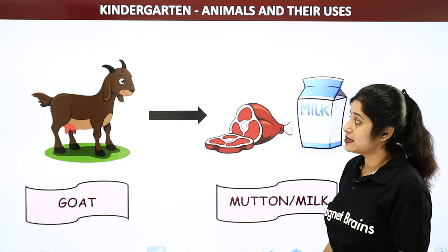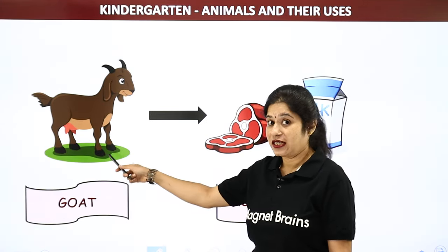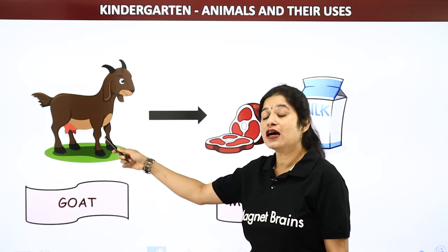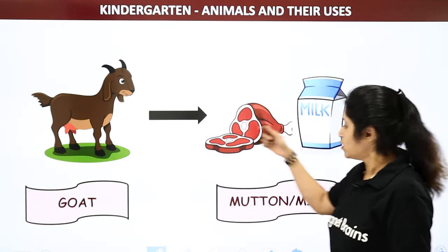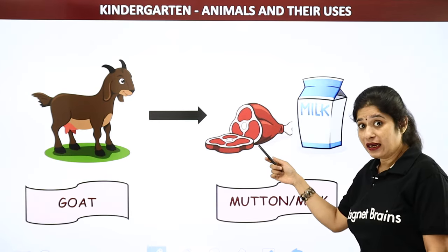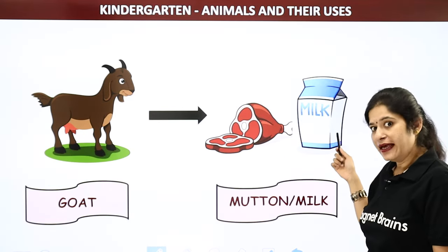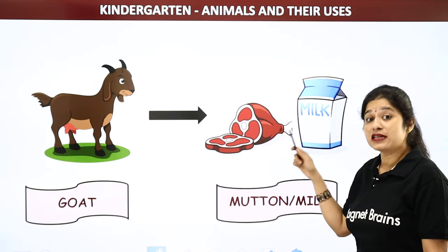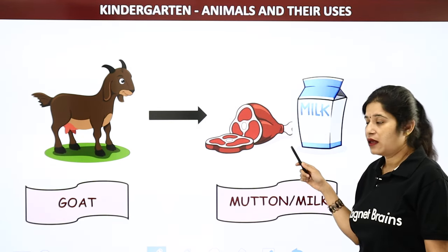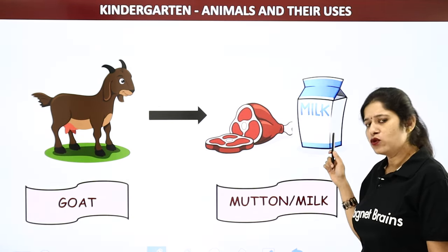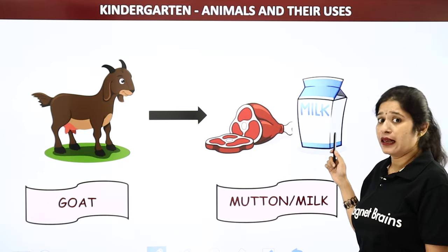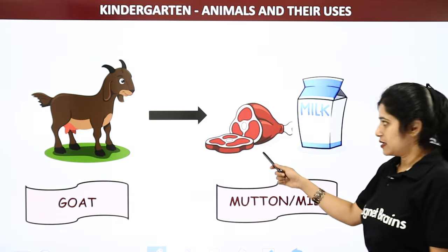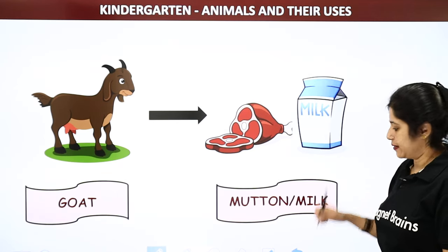Now let's see the next animal — it is a goat. Goat gives us mutton as well as milk. Many of them eat the mutton of goat, and many people used to drink milk of goat. So goat gives us mutton and milk.